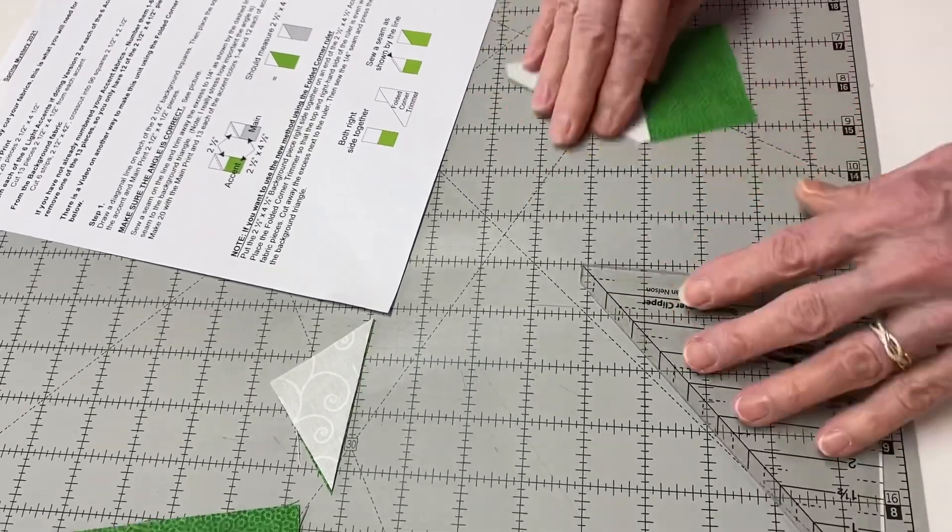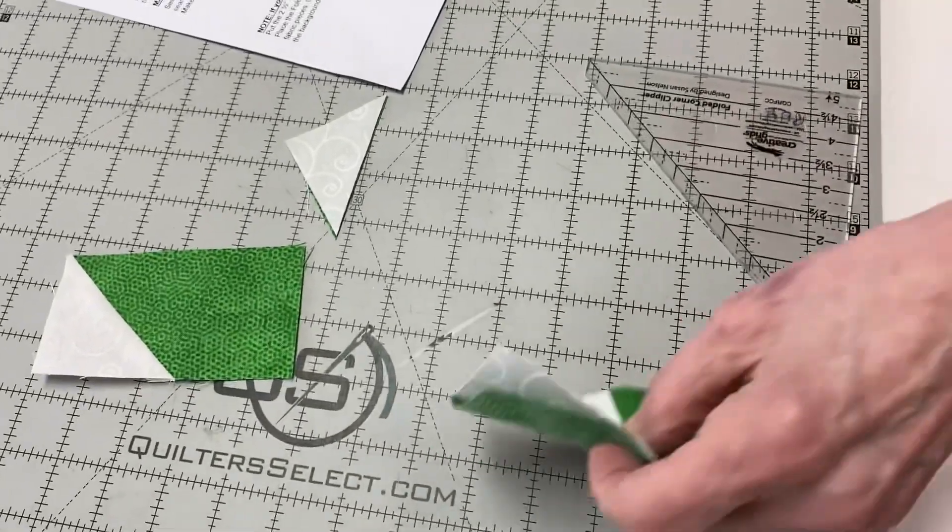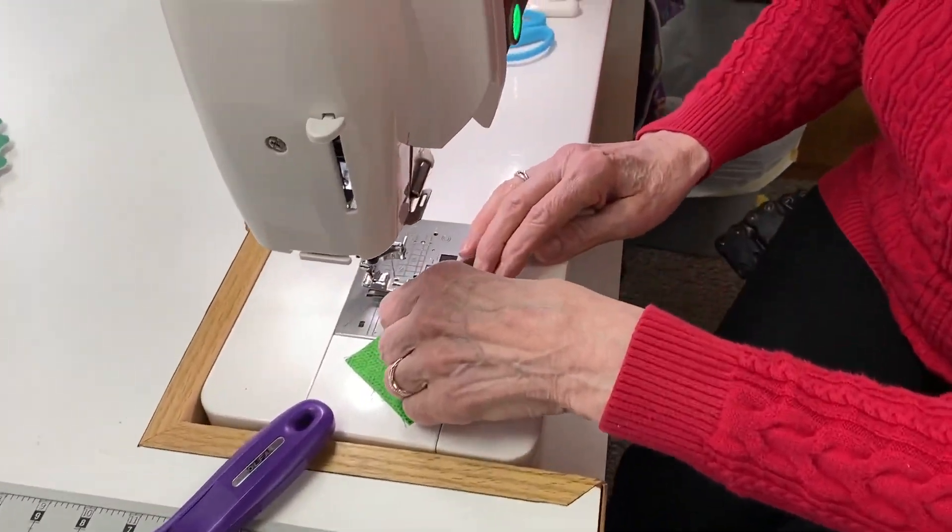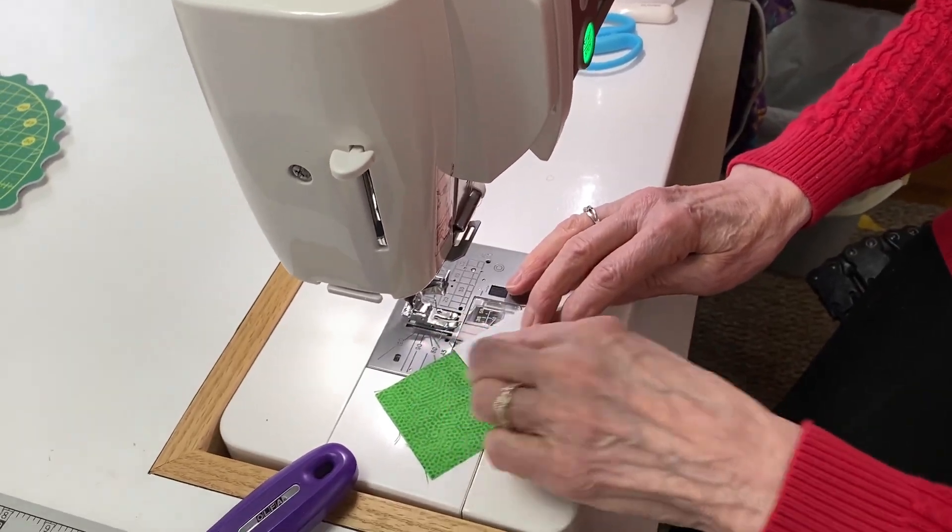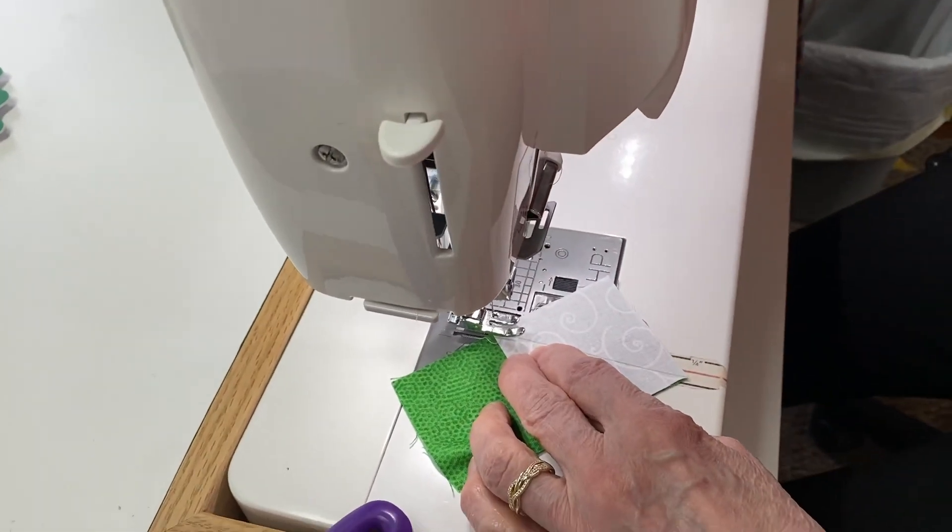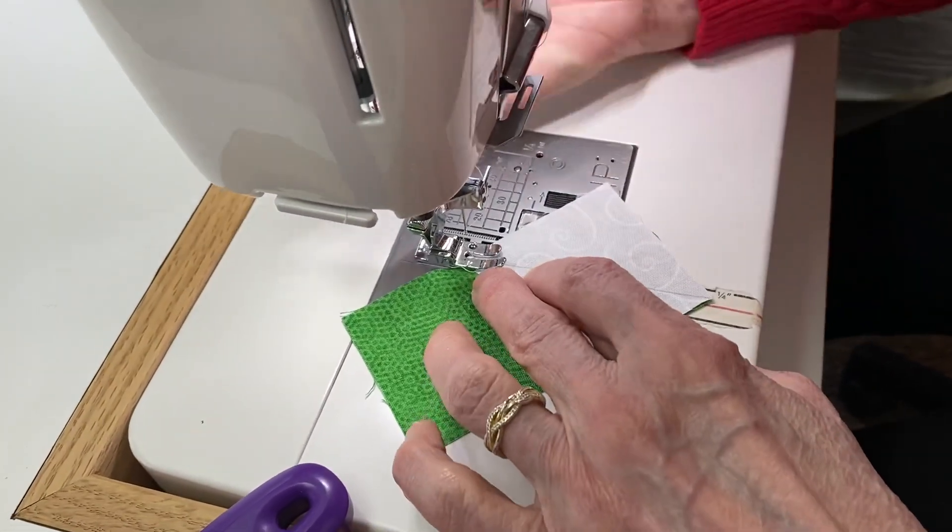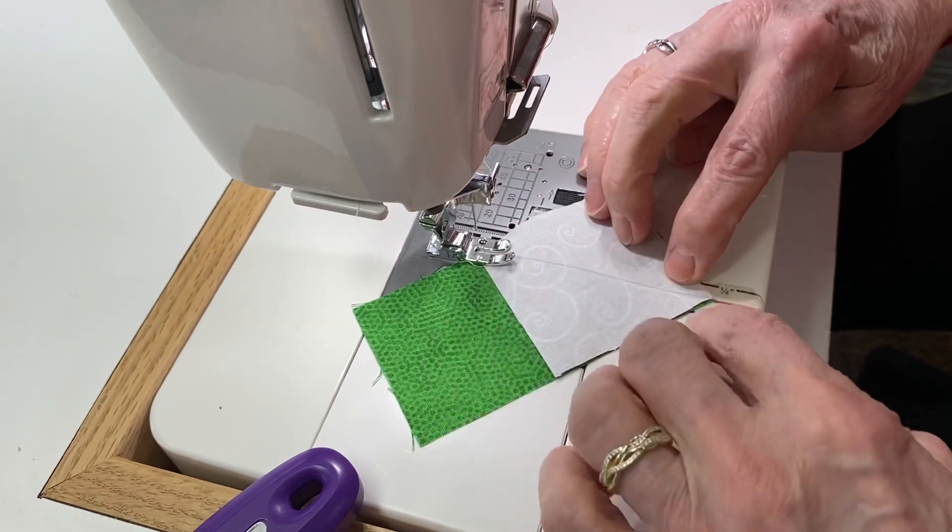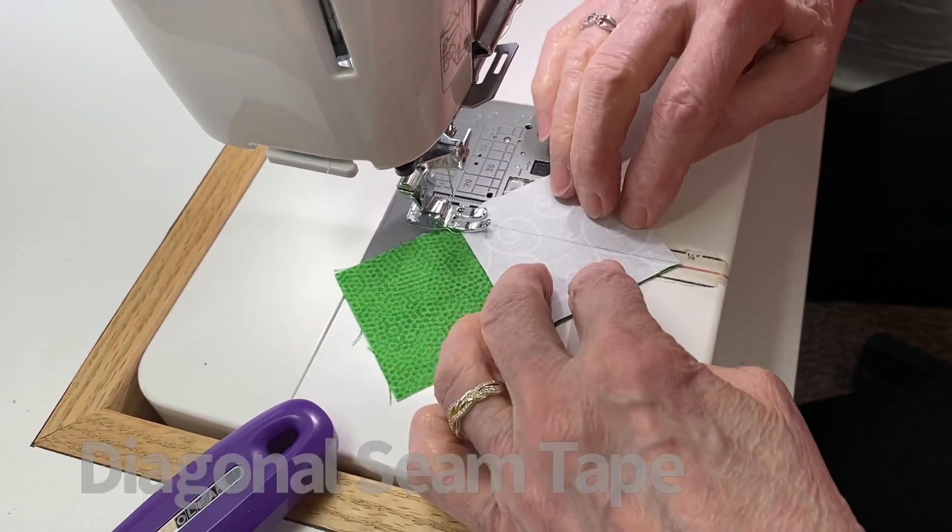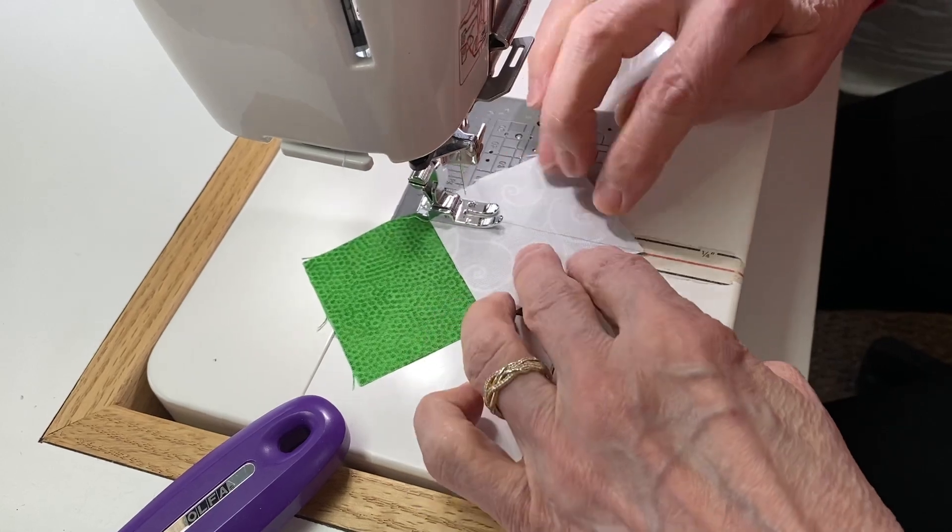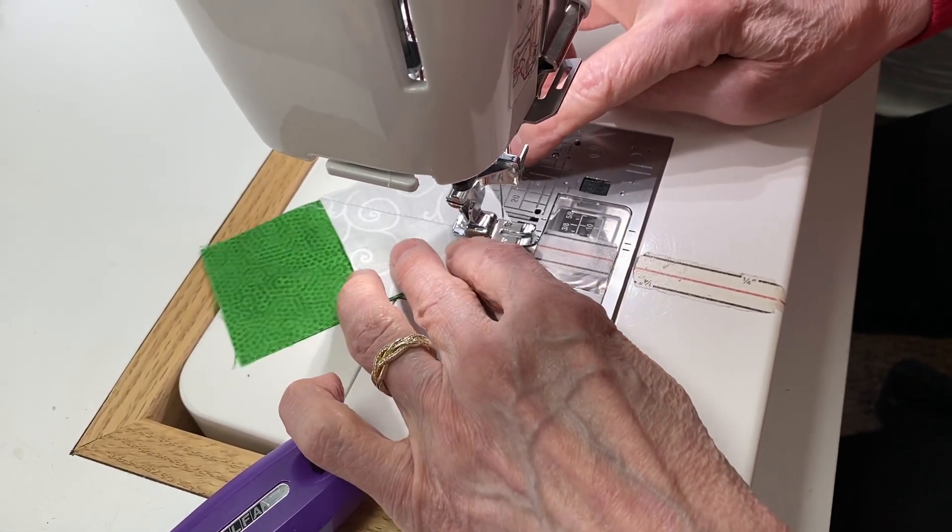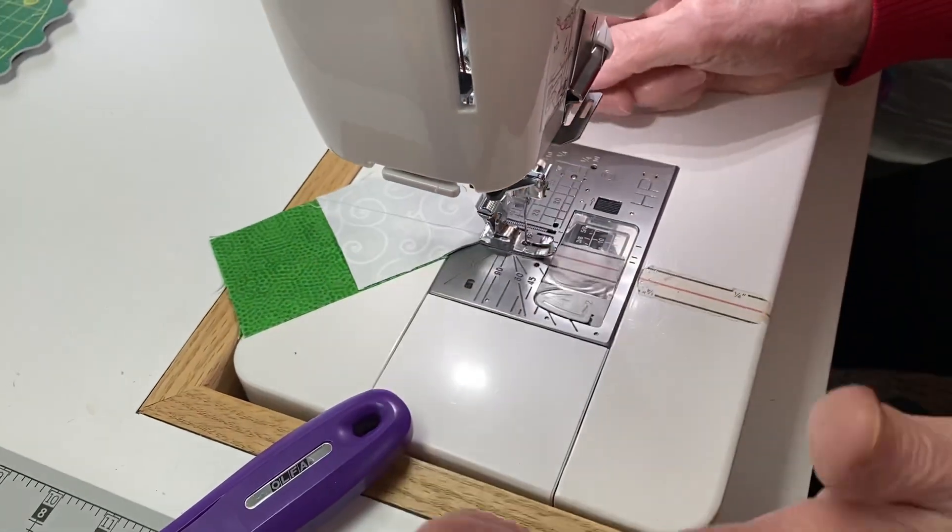There's another way of doing it also. You take and place your square right on top of here, pretend that the line is not there. Then you would just put your presser foot down and sew right on that line, lining up so you have a piece of tape right in front of your needle. Then you would just line that up right on that line there and just sew. So there you go. You don't have to draw the lines if you do it that method.